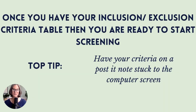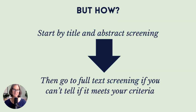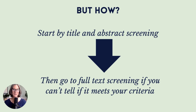Once you have your inclusion/exclusion criteria, you're ready to start screening. My top tip is to write that criteria on a post-it note and put it on your computer screen so you can keep referencing it. You're going to start by screening titles and abstracts — read the title first, decide if you might include that paper, and if you're unsure check the abstract as well. If it might be good but you can't really tell, save it for full text screening, which is a deeper dive to see whether it meets your criteria. Make sure you save those papers to a folder on EBSCO so you can come back to them.